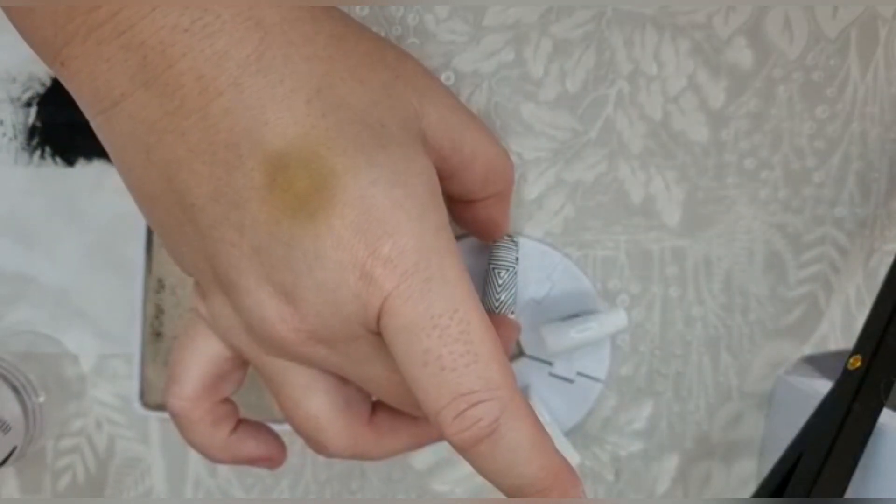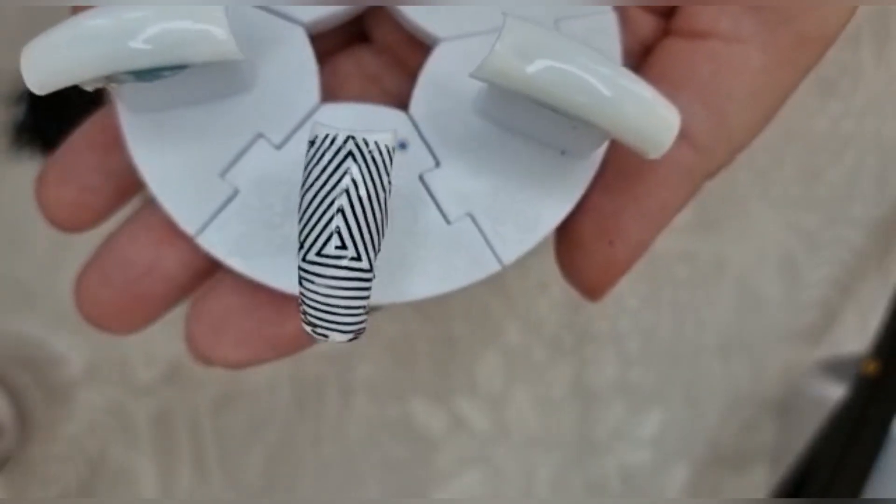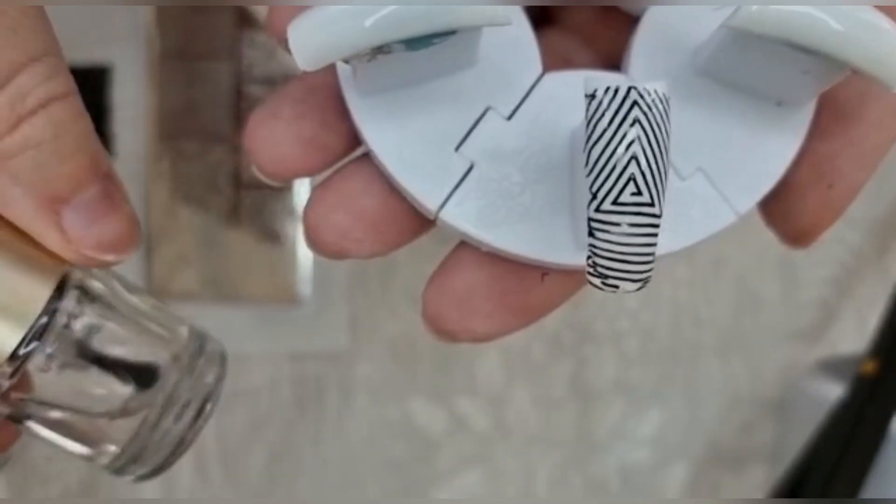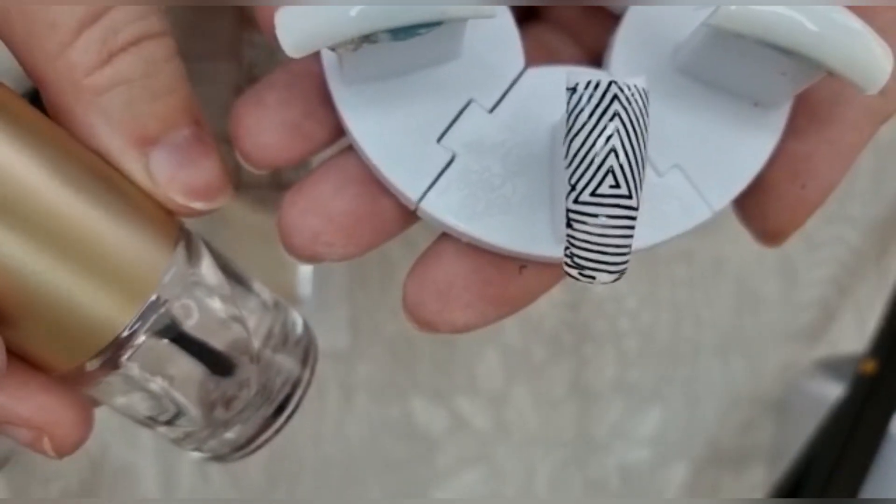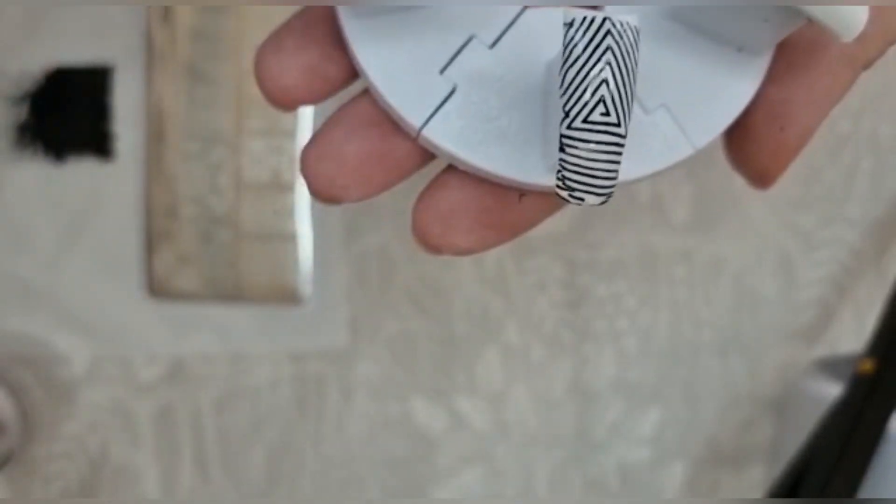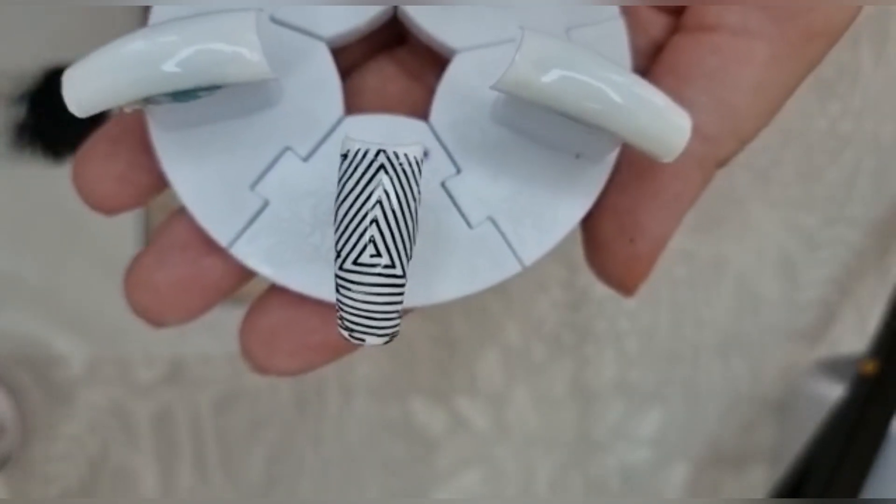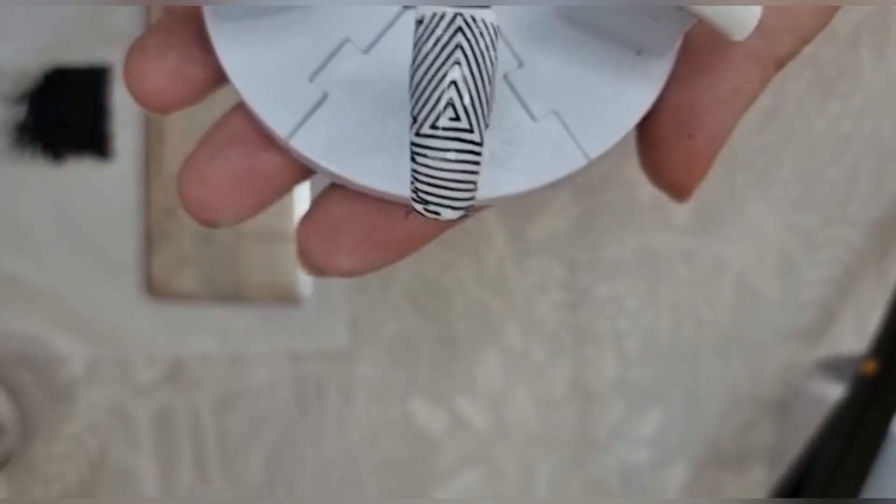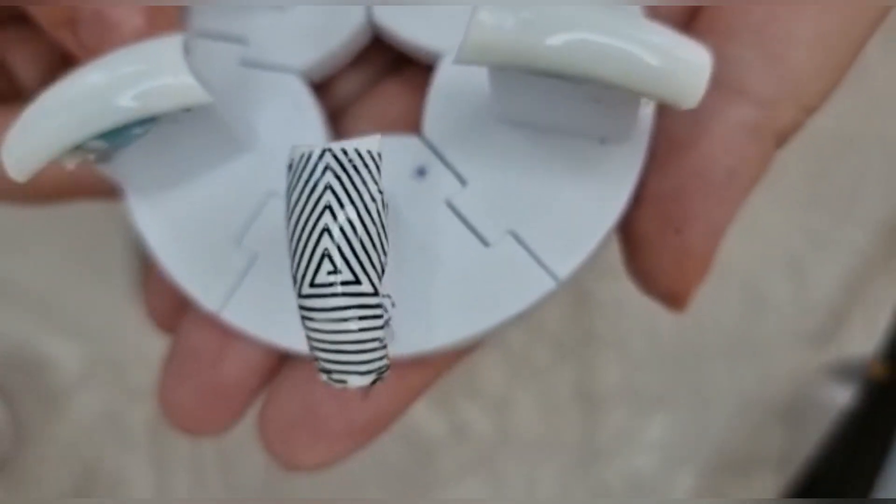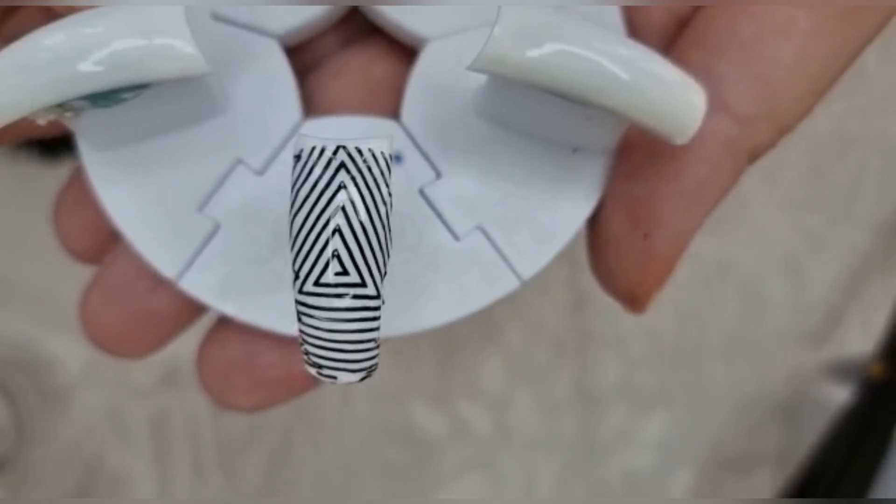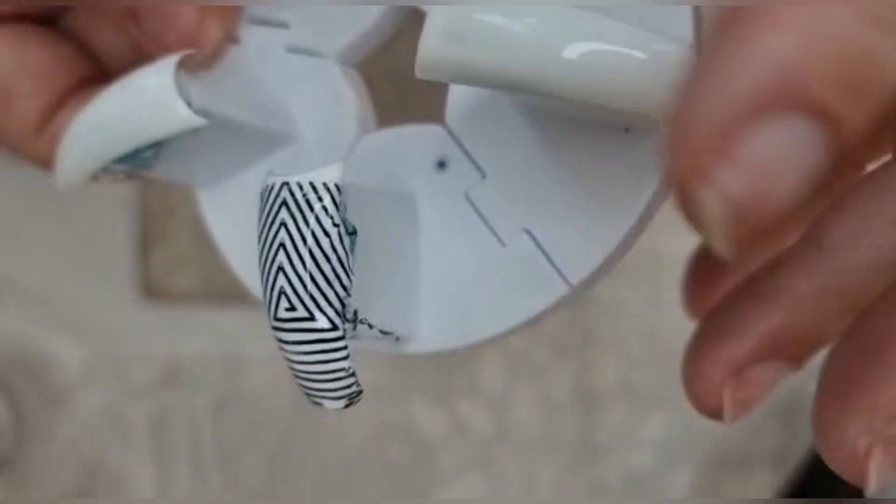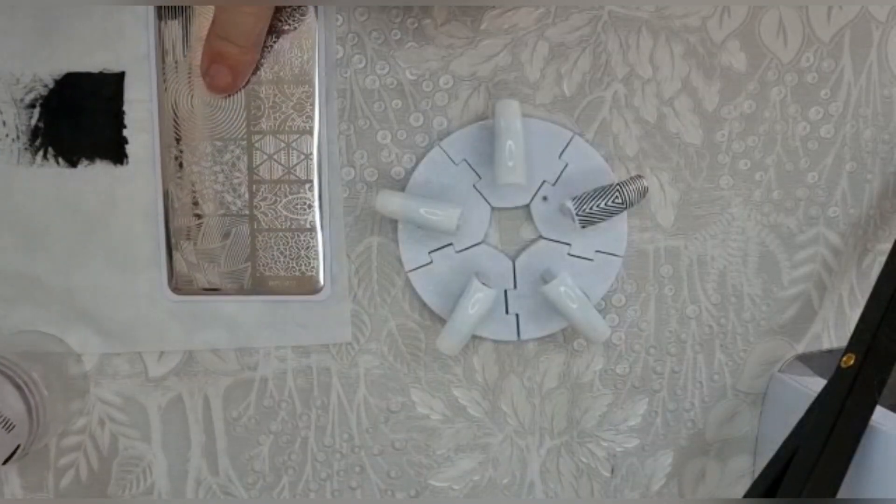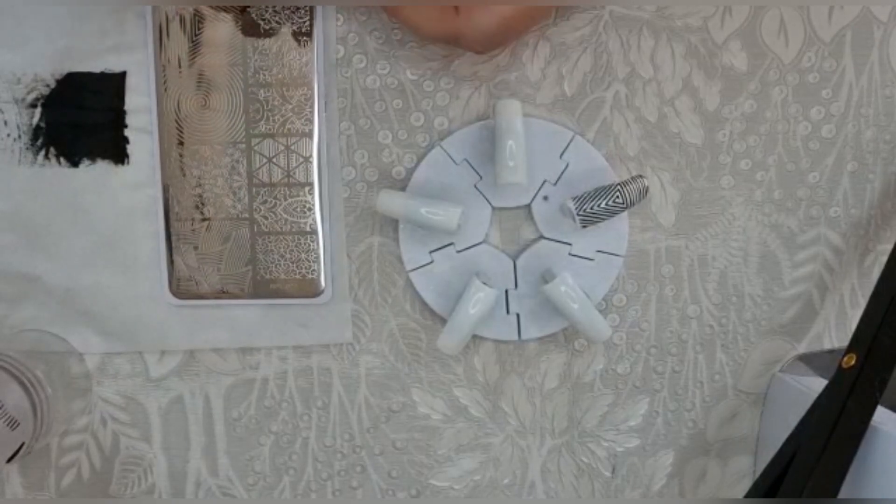So that's the first one, top coated with the MoU London top coat. I use this, as I said in the last video, because it is specifically for stamping. Sometimes when you use a top coat, it can smudge or melt the stamping a little bit, so I like to use their own top coat because it doesn't damage it. That will dry naturally - it doesn't go under a lamp.